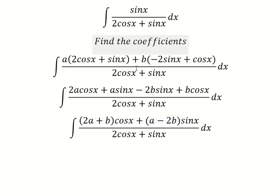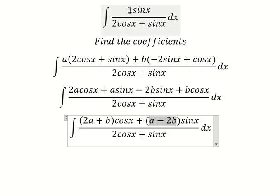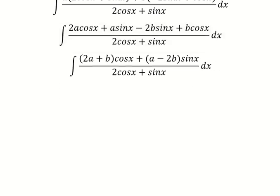If we look carefully, we have 1, so this one equals 1. For this one, we don't have cosx, so 2a + b = 0. We create a system of equations.